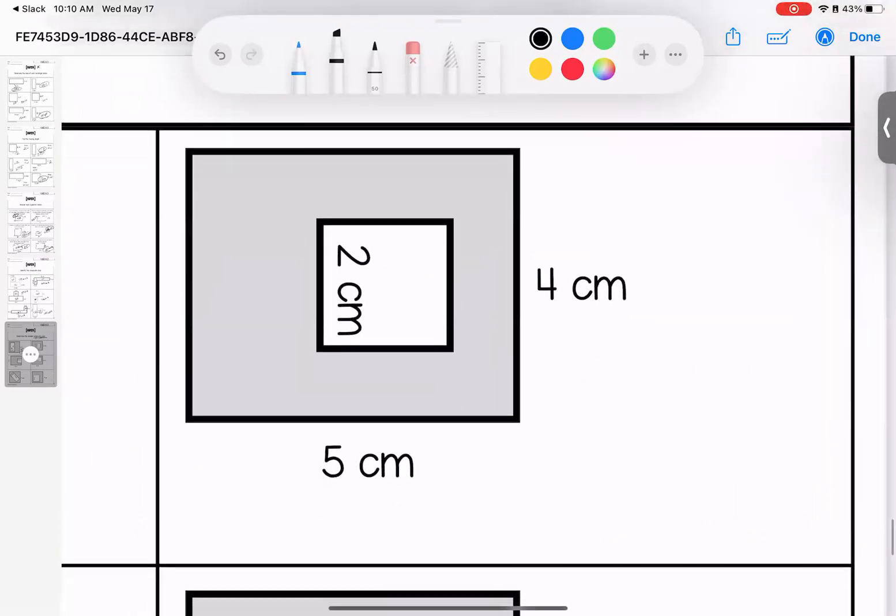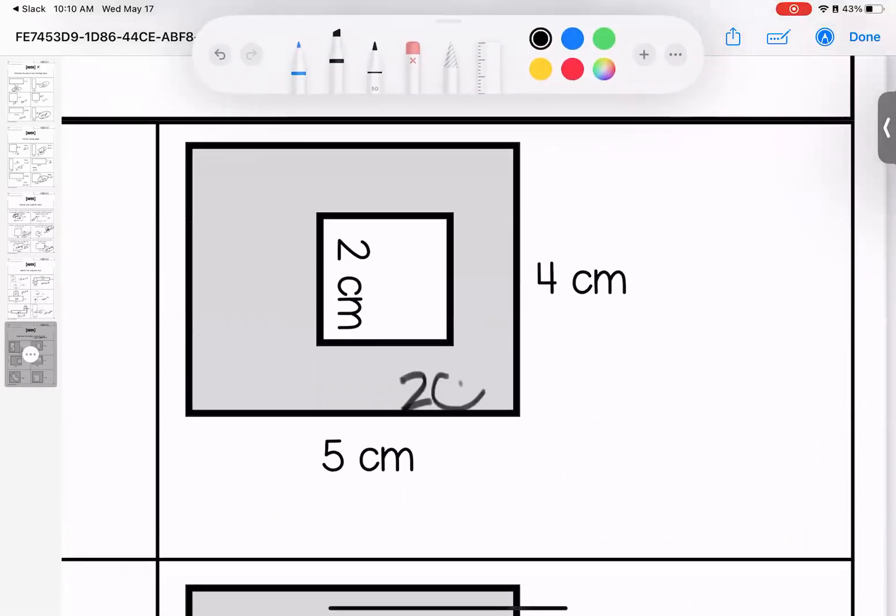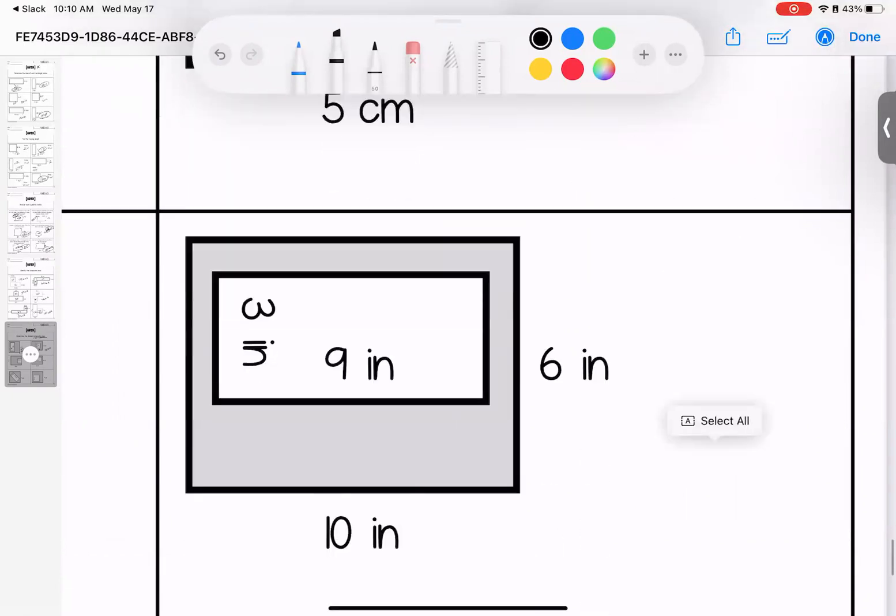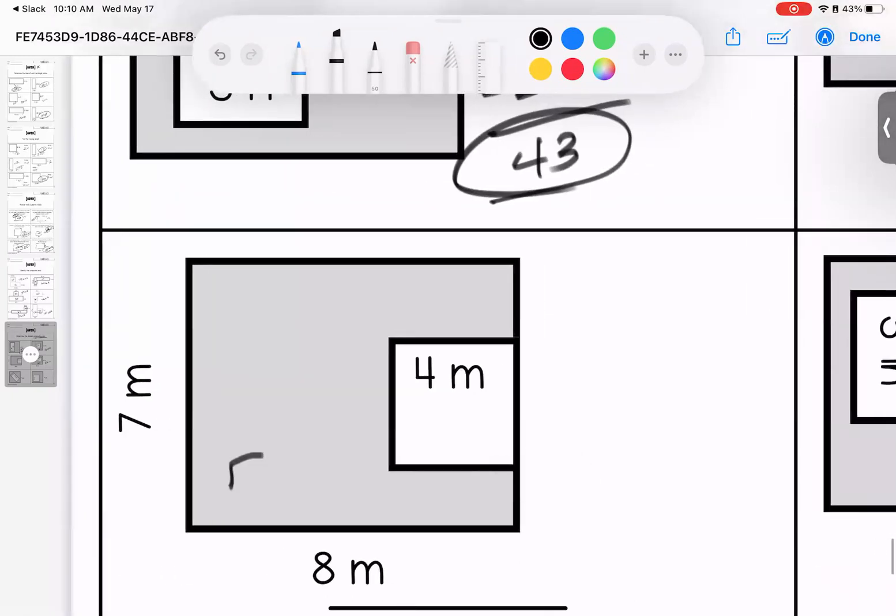Here our shaded is 20, but the blank in the middle is 4, so 16 centimeters is shaded. Shaded is 60 but inside is 27, so when we take away the 27 that is not shaded we have 33 inches squared. Shaded is 56, not shaded is 16, so when we take away the 16 that's not shaded we have 40 meters squared.